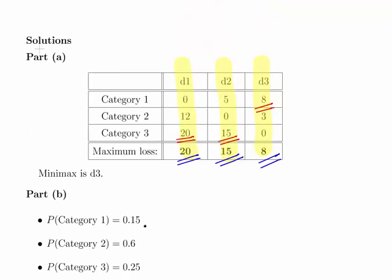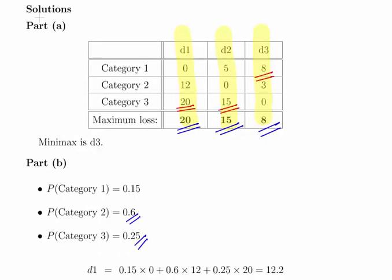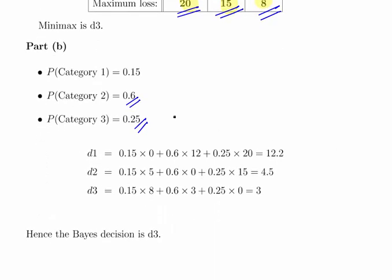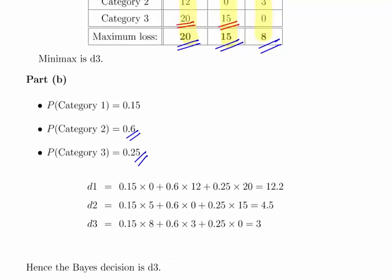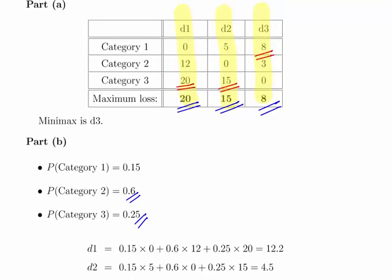We're told that category 1 is 15%, category 2 is 60% (we figure that out), and category 3 is 25%. Looking at the table above for d1, the probability of category 1 is 15%, category 2 is 60%, and 0.25 for category 3.